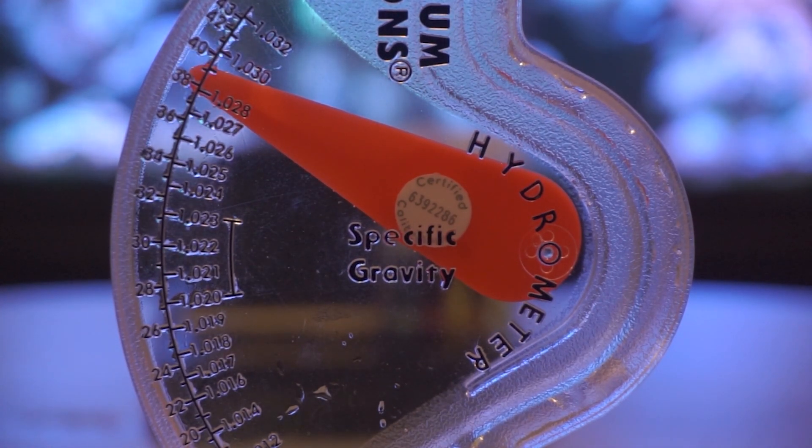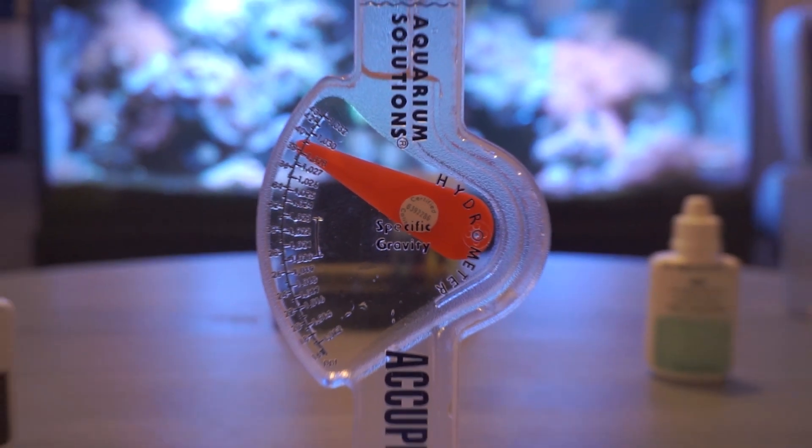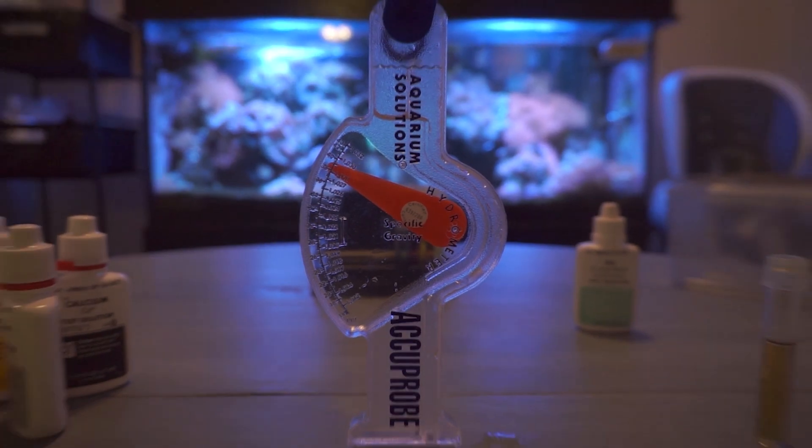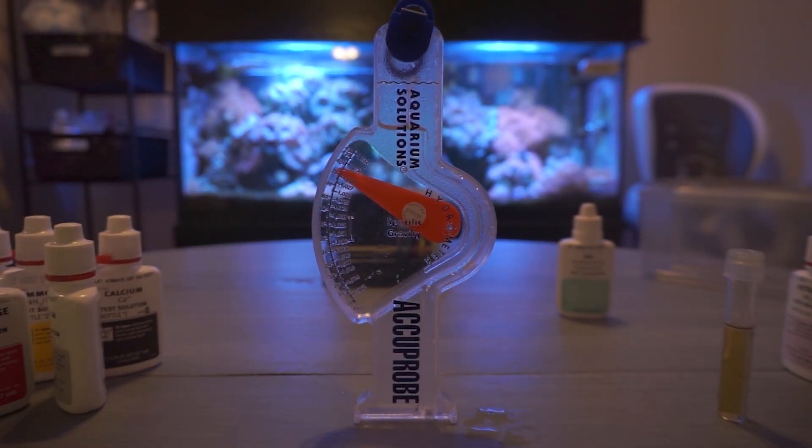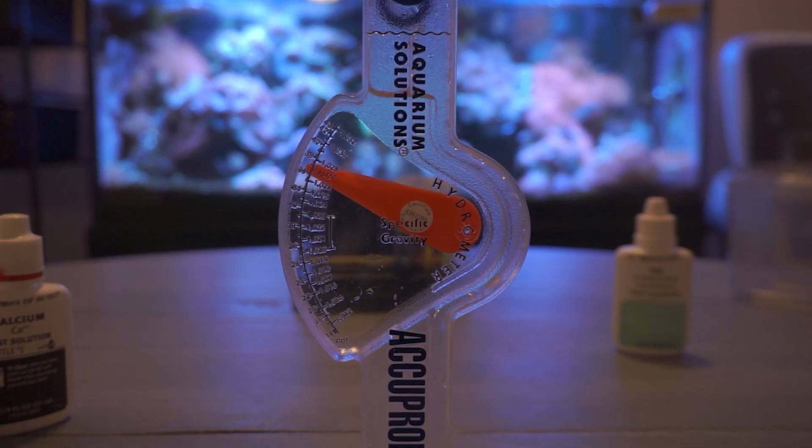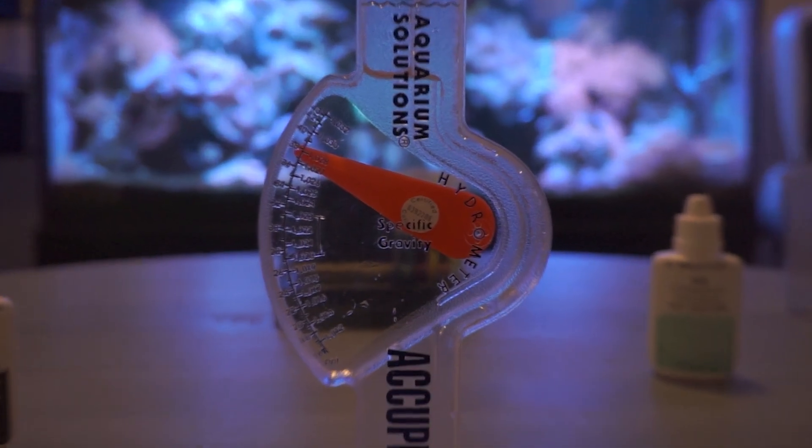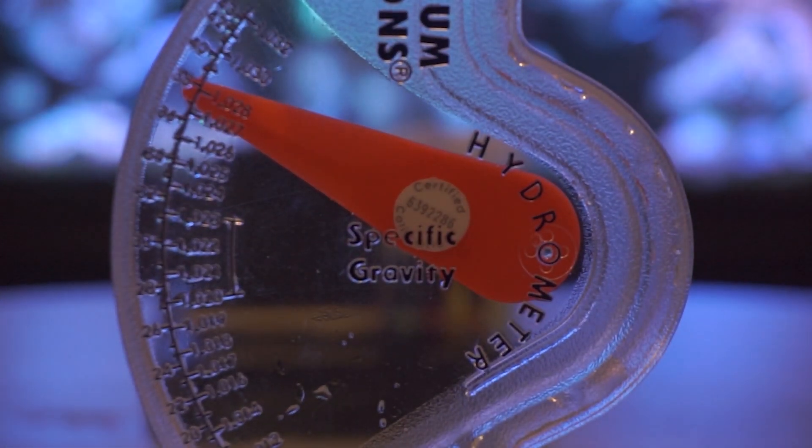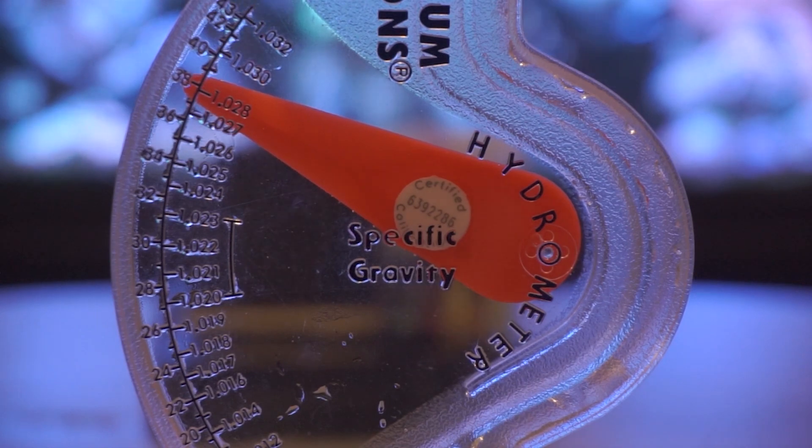Now another thing you can use is a refractometer to test your salinity. This is almost like a little telescope looking thing that you put a drop of water on. That will give you the most accurate salinity testing. They are very cool to use and they will give you a very accurate reading each time that you test your salinity.